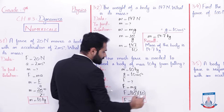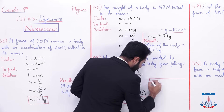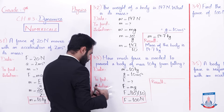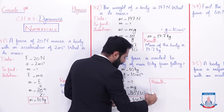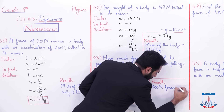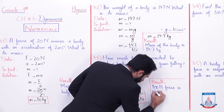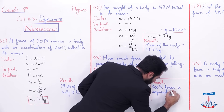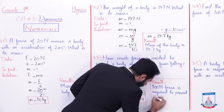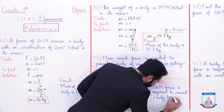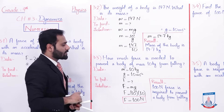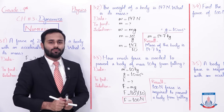Write the result: 100 newton force is required to prevent a body from falling. I hope the numerical aapko samaj aa gaya hoga.